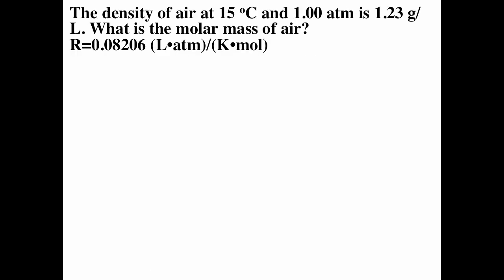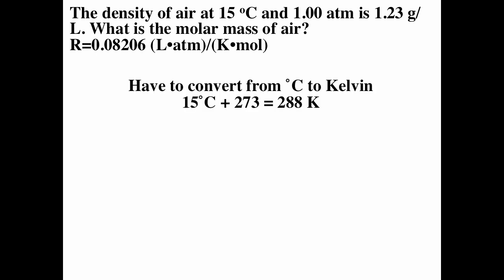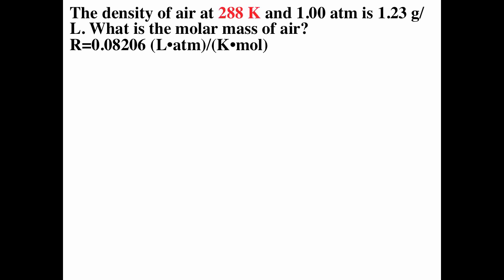Given the density of air at 15°C and 1 atmosphere is 1.23 g/L, what is the molar mass? We need to convert Celsius to Kelvin: 15°C + 273 = 288 K. Using D = PM/RT, we solve for molar mass: M = DRT/P, multiplying both sides by RT and dividing by P.